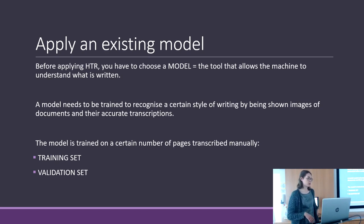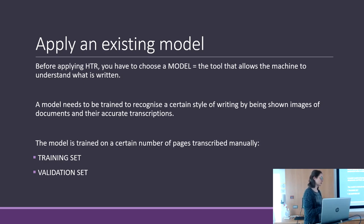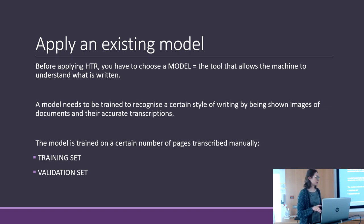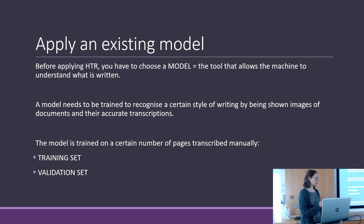The model is trained on a certain number of pages transcribed manually by humans, so paleographical skills are also important. Behind there is a human transcriber that teaches the machine. When we train a model, the pages are divided into the training set — pages on which the machine learns — and the validation set — pages on which the machine tests itself.